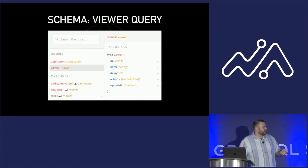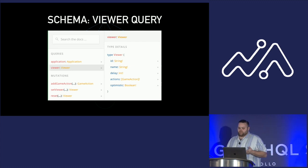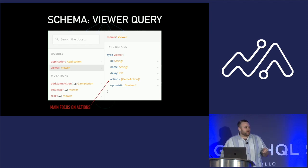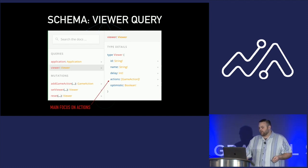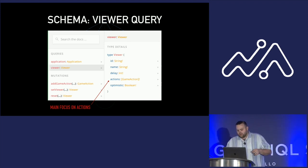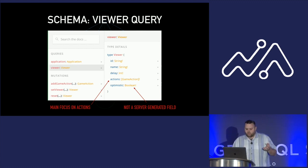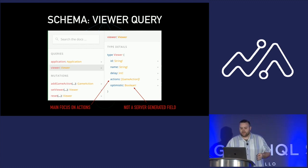Let's take a look at our schema for our app. It's a very basic viewer query. We have a name, the server delay, a list of actions — this is going to be our main focus — our player touchdowns, extra points, field goals, things like that. I also added an optimistic field, not added by the client, but more for me to discern between what's optimistic and what's not.